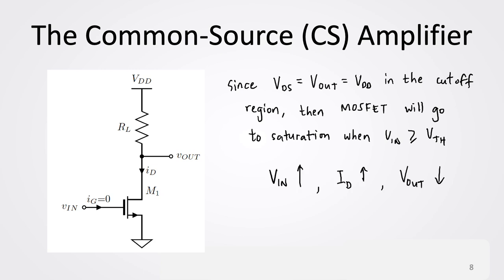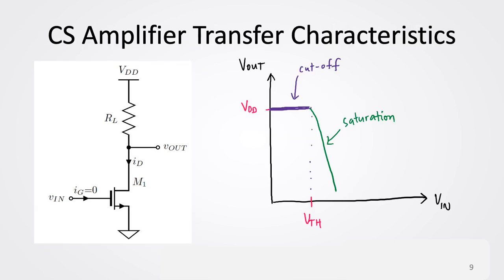Since we're starting with a large VDS, the MOSFET will go from cutoff into the saturation region. In saturation, when VIN increases, VGS increases, so the drain current ID also increases. If ID increases, the voltage drop across RL increases, and therefore VOUT decreases. So in saturation, as VIN increases along the X-axis, VOUT decreases. This is the point where you have amplification because the curve in saturation has a negative slope — the common source is an inverting amplifier.